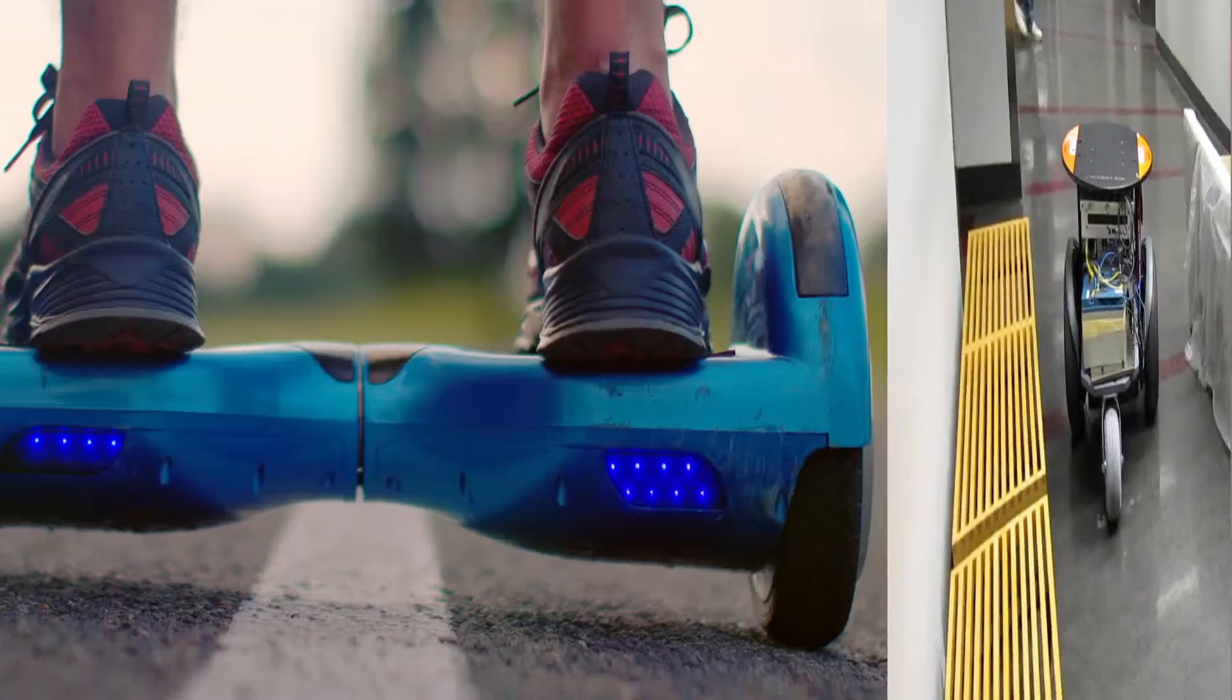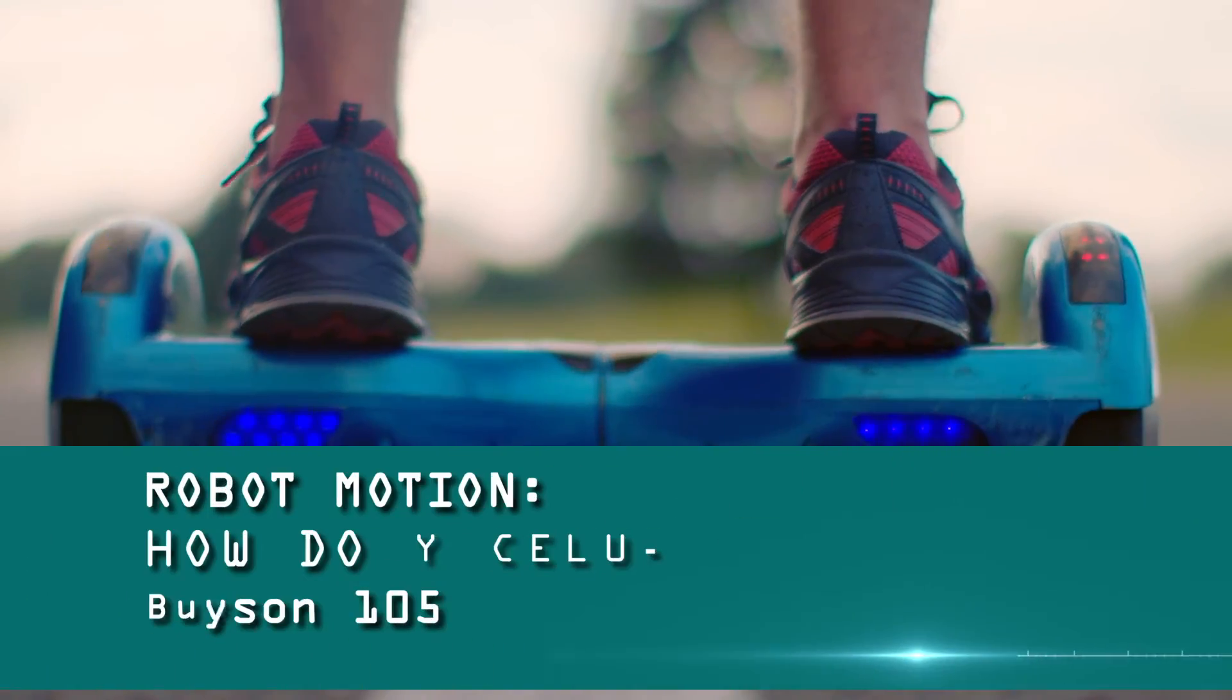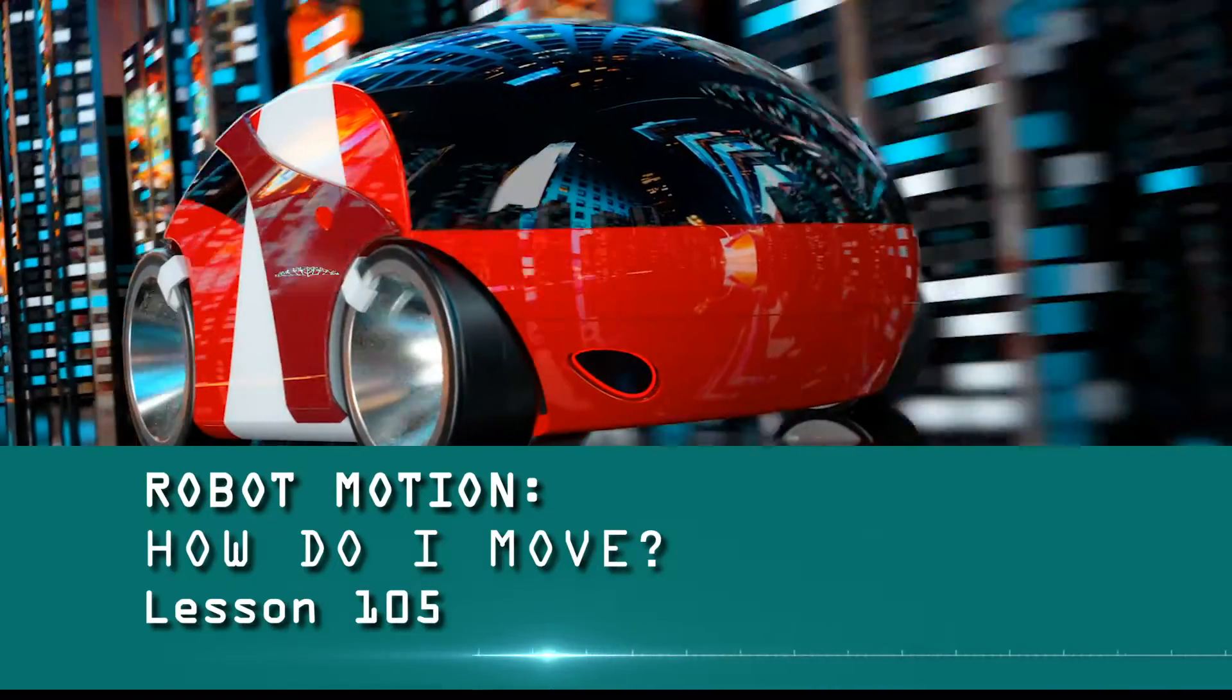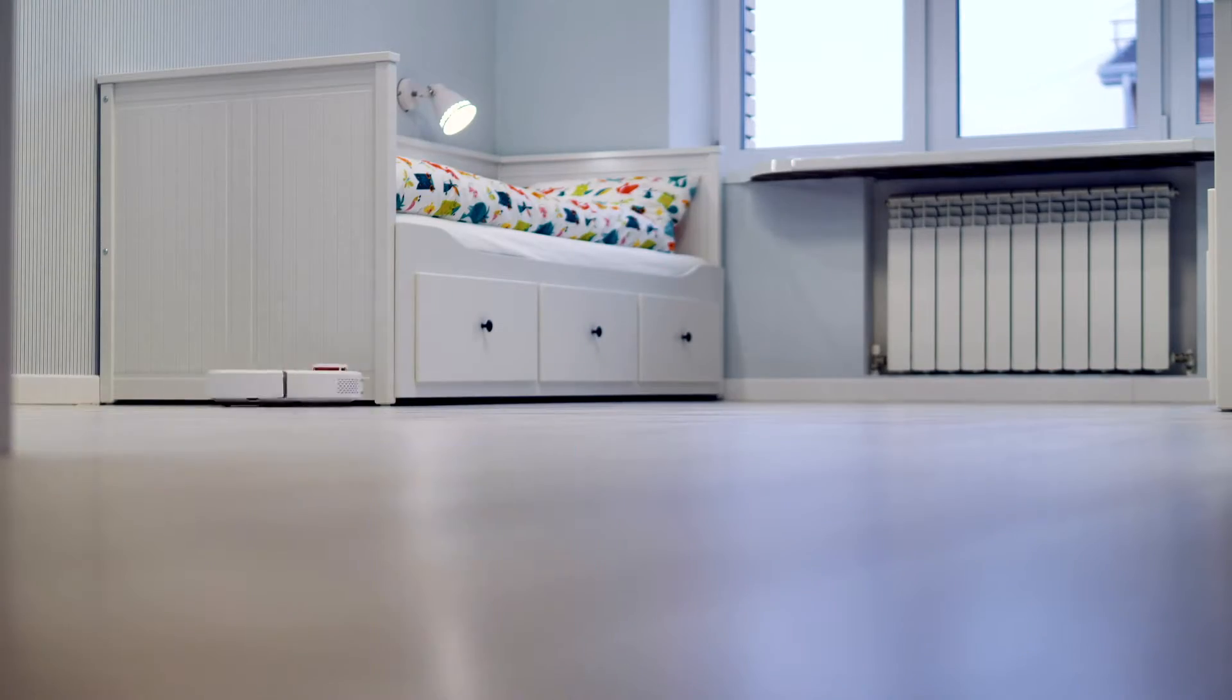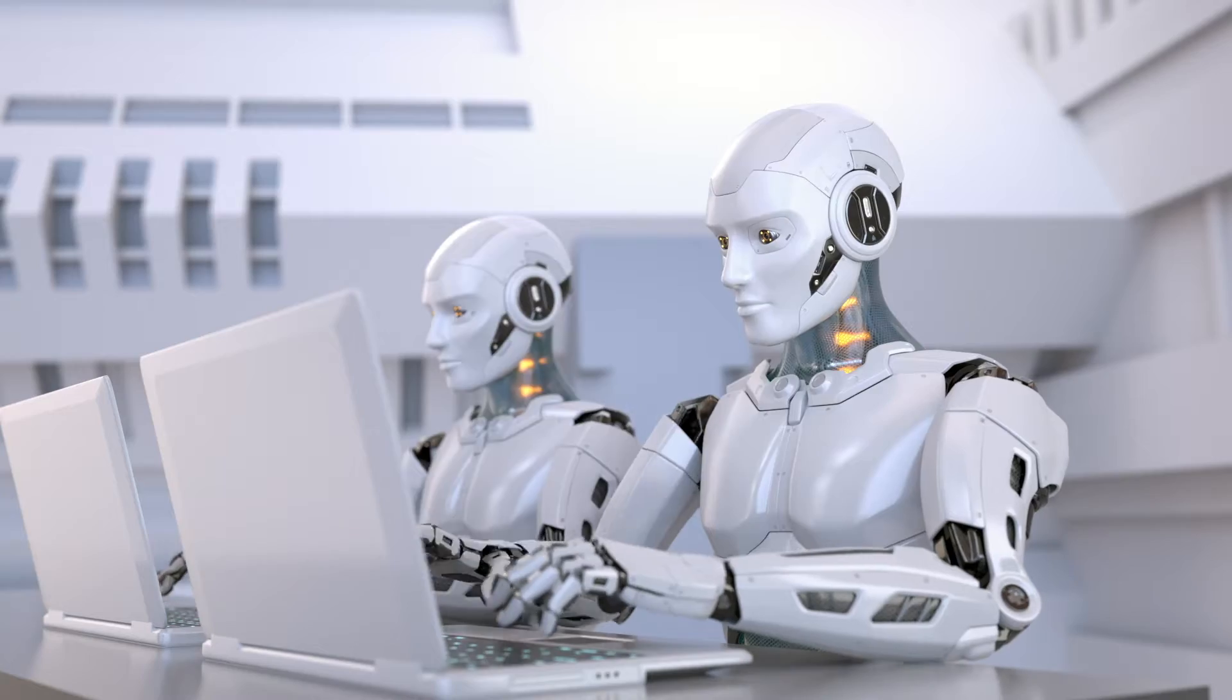In lesson 105, we will explore how ground robots move. We will also look in detail at how to write math equations that reflect the robot's position over time. This episode, we'll be talking a lot about circles and the math equations that go with them. So as always, be prepared to take notes.